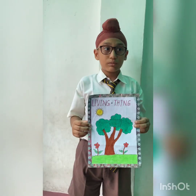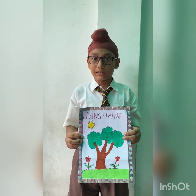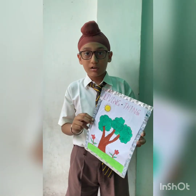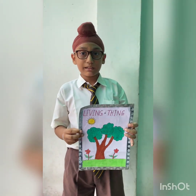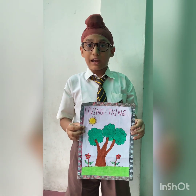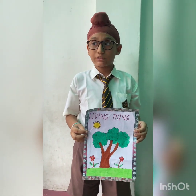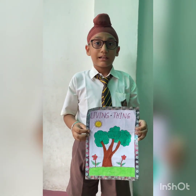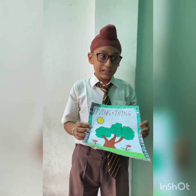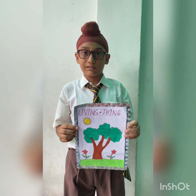Good morning, my name is Priyam Chaudhary. I study in class 3B. I draw a plant. Plants can make their own food with the help of sunlight, air and water. This process is called photosynthesis. The green pigment present in the leaves is called chlorophyll. Thank you.